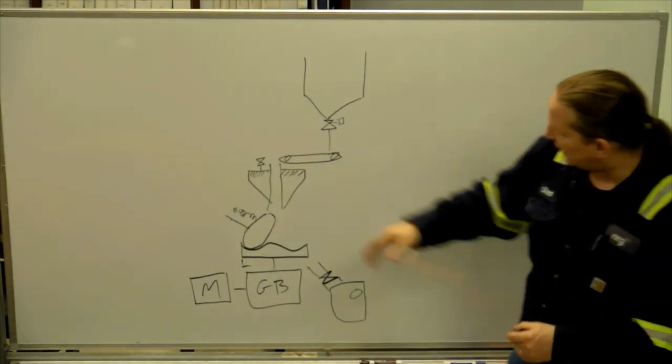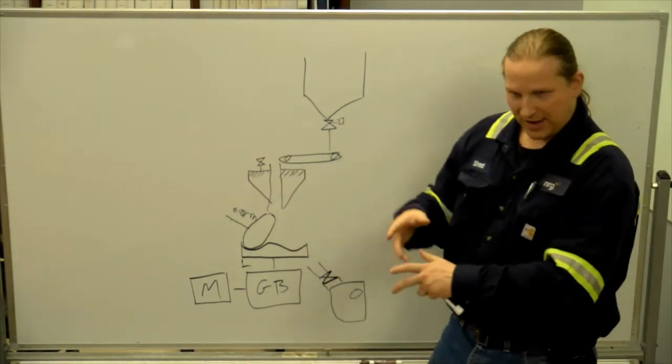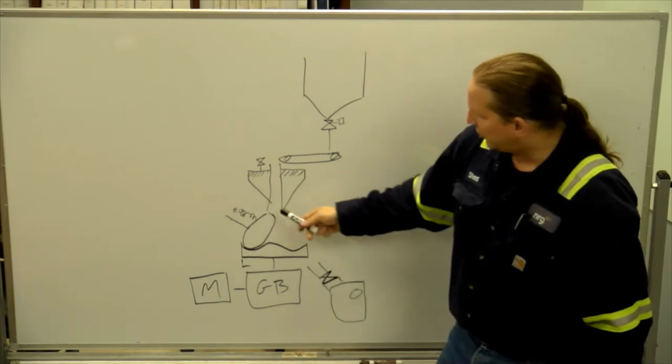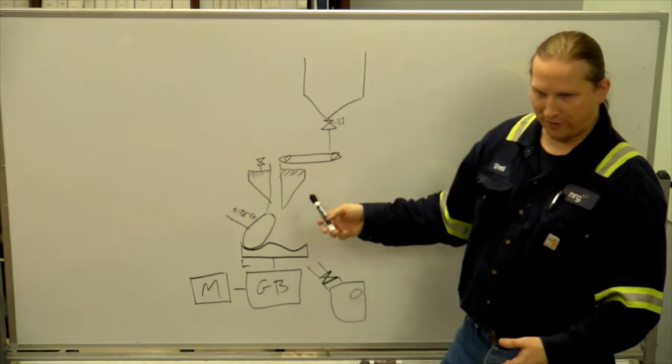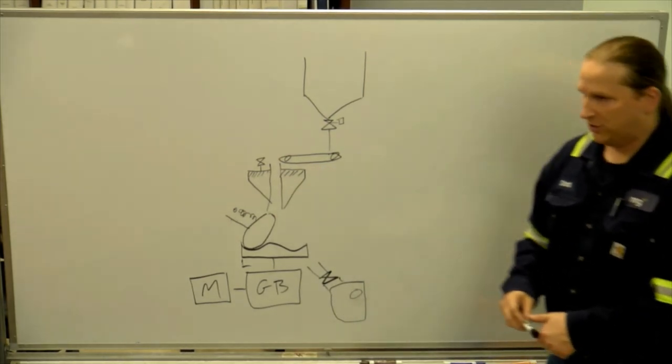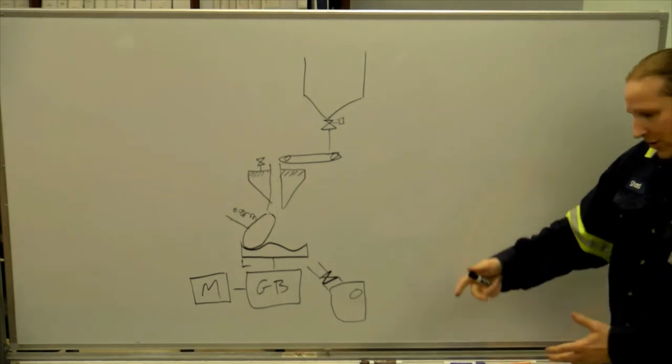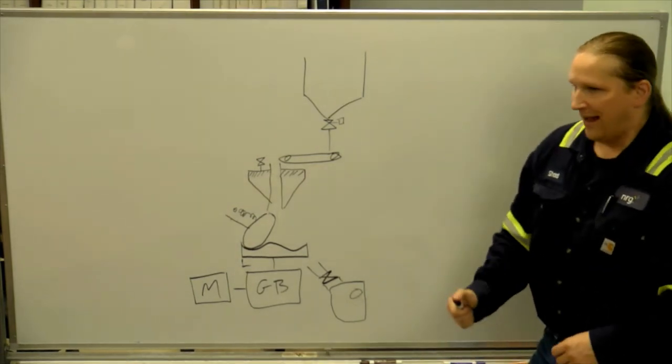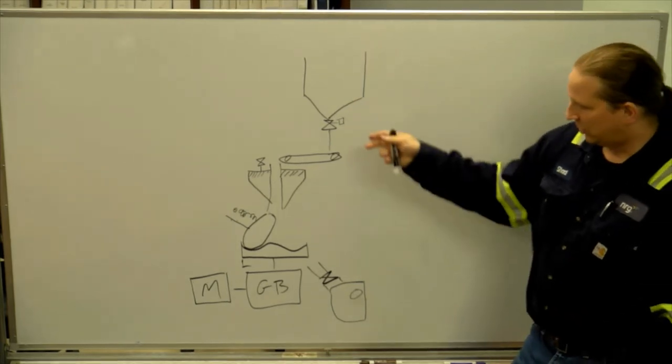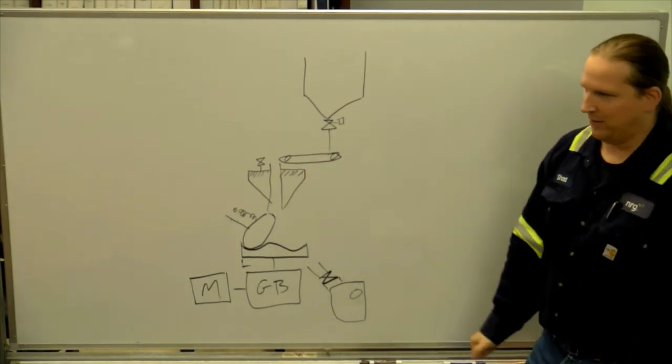So the classifier is like a screen and it's got a motor on top that can adjust the space to make sure that the coal that makes it through the screen is fine enough that it goes up and burns. Because coal has a lot of energy in it, but you have to get oxygen to all the parts of it for it to actually burn. Otherwise you get chunks that fall down into the bottom ash and end up in the bottom ash pile.